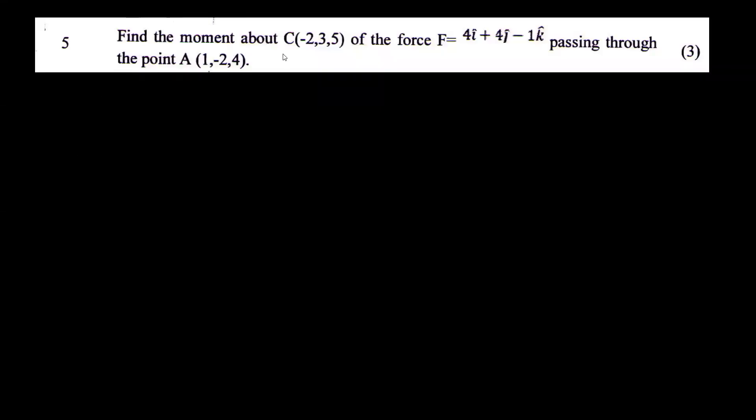Find the moment about C(-2, 3, 5) of the force F equal to 4i plus 4j minus k, passing through the point A(1, -2, 4).